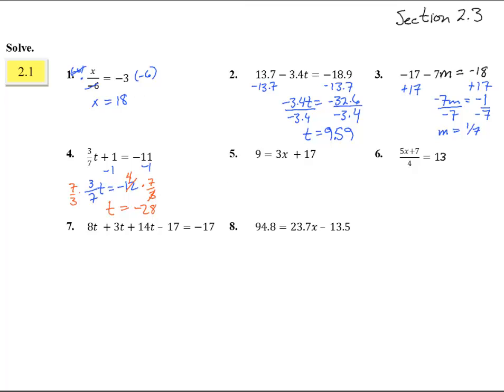Number 5. 9 minus 3x plus 17. We're going to subtract 17, and we get negative 8 equals 3x. Divide by 3, and we get x equals a negative 8 thirds.